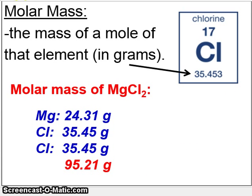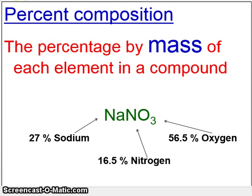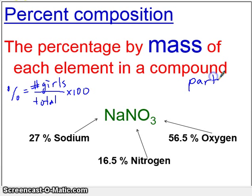So, the first thing we'll talk about is something called percent composition. Now you should be aware of how percents work. Percent, if you want to know the percent of anything, percent means part over, so the percent, say, of girls in our class would be the number of girls divided by the total number of students. And then you multiply that by 100. This is always the formula for percent. The general version of it is part divided by whole times 100. This is how percents are determined.